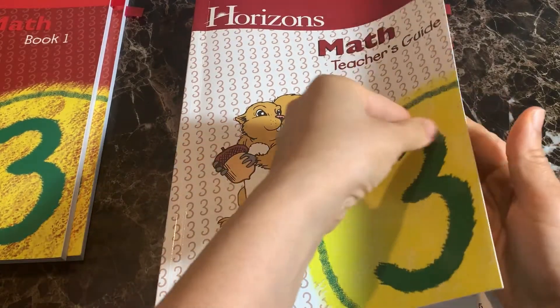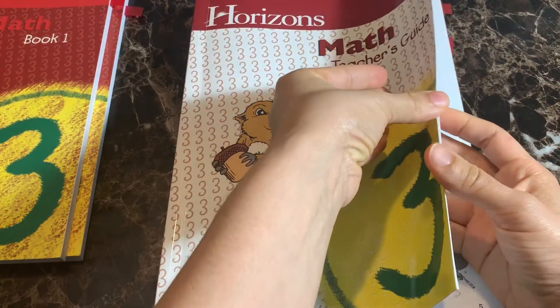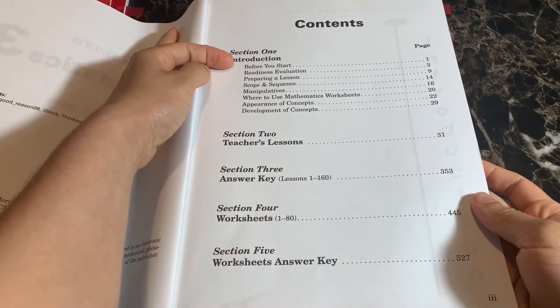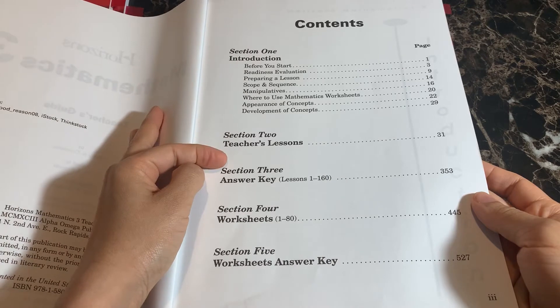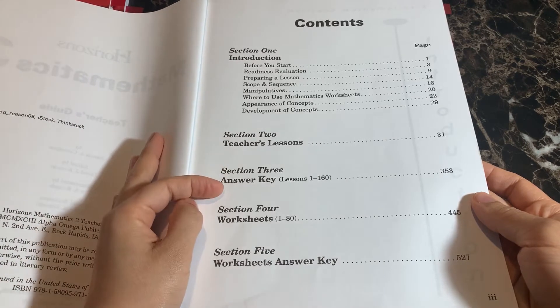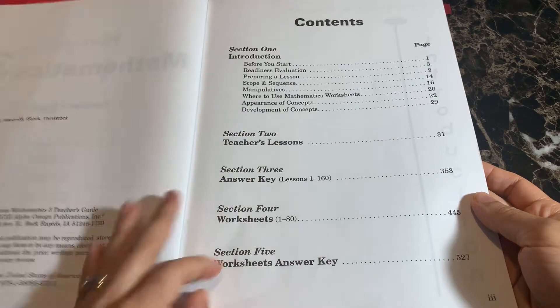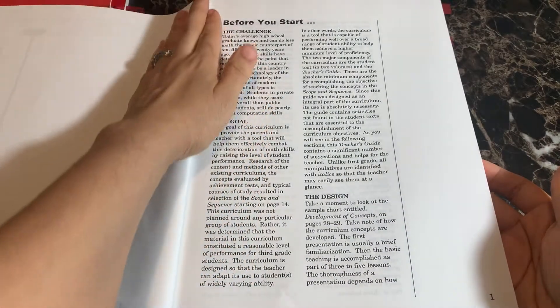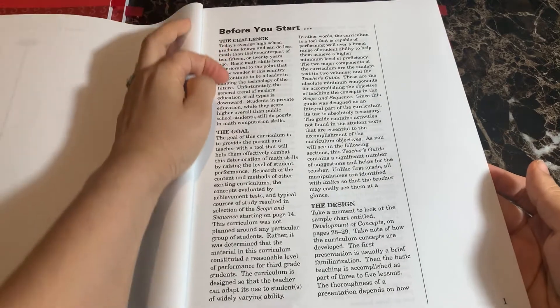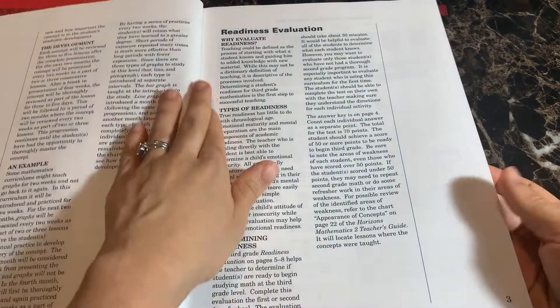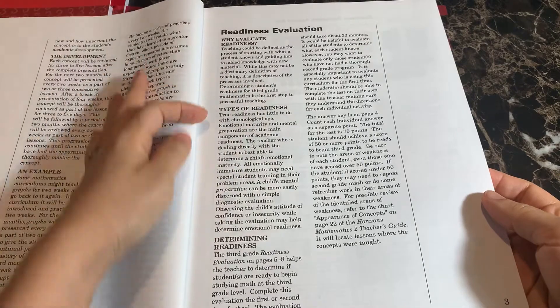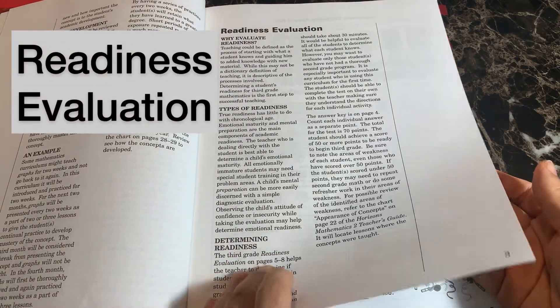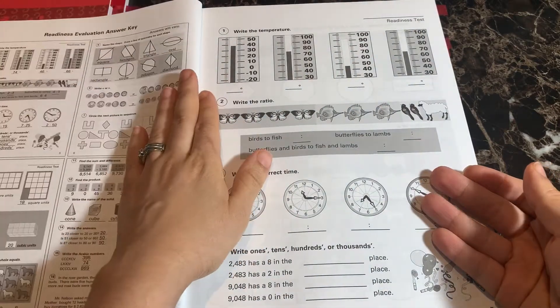All right, so I'm going to show you a look inside the teacher guide first, and then we'll move on and show you the student books as well. Okay, in the teacher's guide, if you'll open it up, it shows that it has section one is the introduction, section two is your teacher lesson, section three is the answer key, section four is worksheets, and section five has the worksheet answer key.